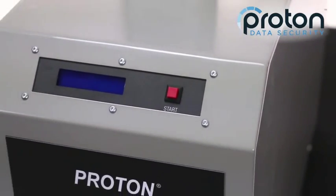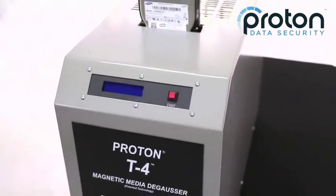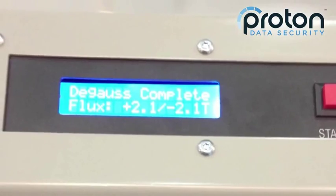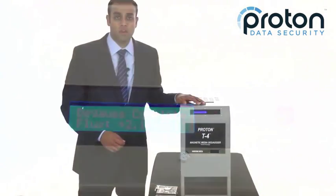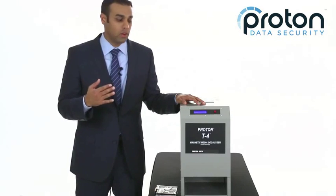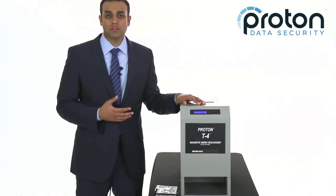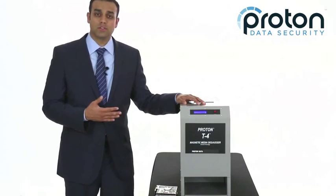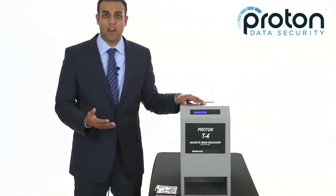As an added safeguard, the T4 has internal sensors which measure the field strength of each and every cycle and report it to the operator on this blue LCD screen. It will report both the positive and negative pulses so you see the bi-directional field, and this ensures that your deGausser is working to NSA specs each and every cycle. It also has a digital cycle counter to help you keep track of your degaussing.